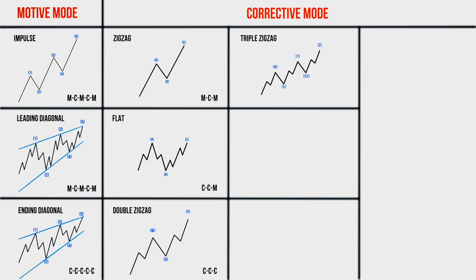Triple zigzag: the task of the triple zigzag is to form a deep correction in relation to the previous trend, the same goal as single and double zigzags. A triple zigzag is formed when neither single nor double zigzags were able to form a correction of the desired depth. As the name implies, the triple zigzag consists of three zigzags connected by corrective intervening waves. All waves of this pattern are formed in the corrective mode and it is denoted by the letters W, X, Y, X, and Z.